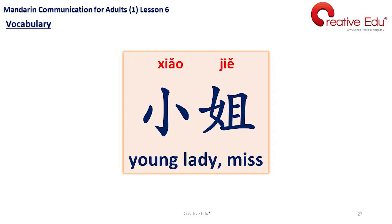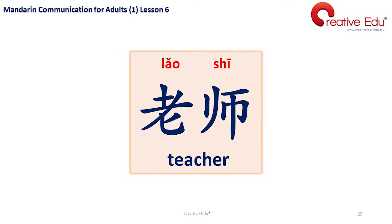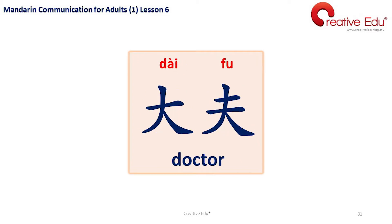Number 1: 小姐 — Young lady, Miss. Number 2: 女士 — Lady, Madam. Number 3: 老师 — Teacher. Number 4: 经理 — Manager. Number 5: 大夫 — Doctor.